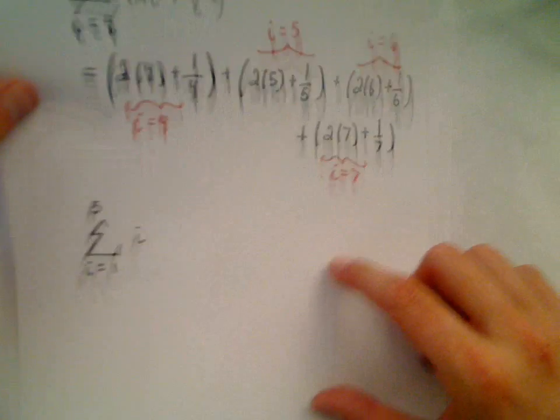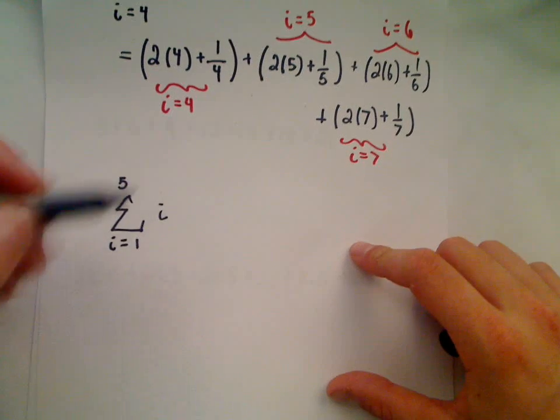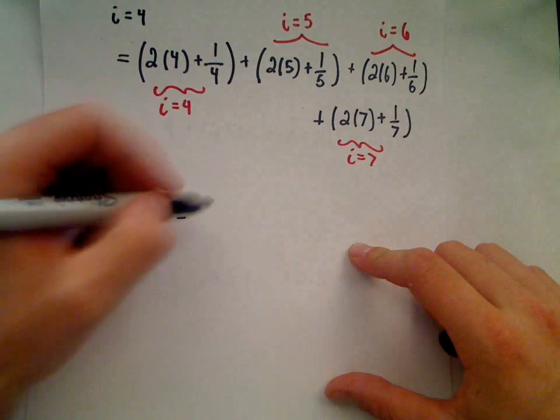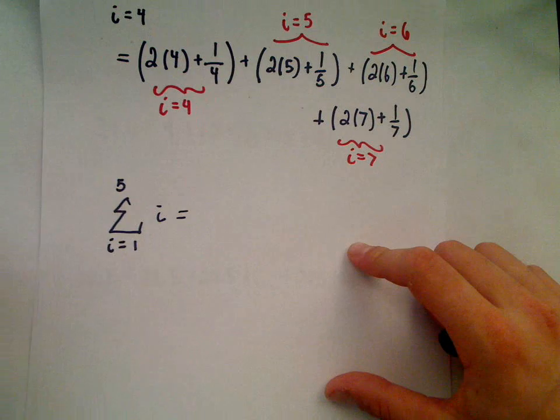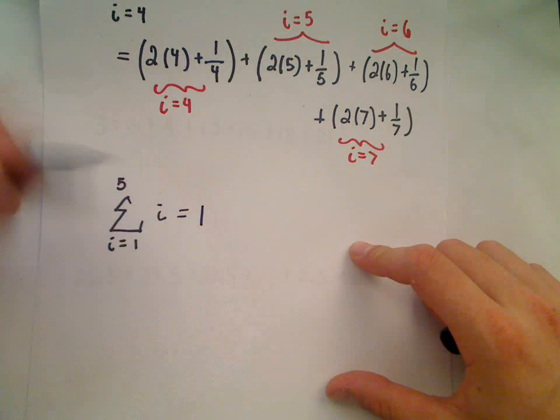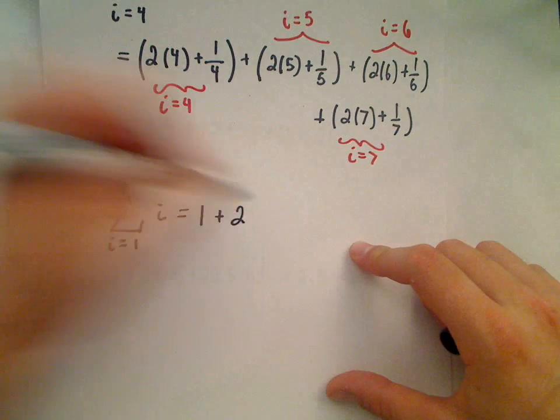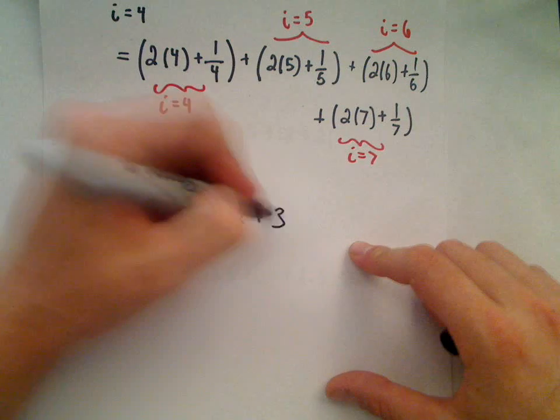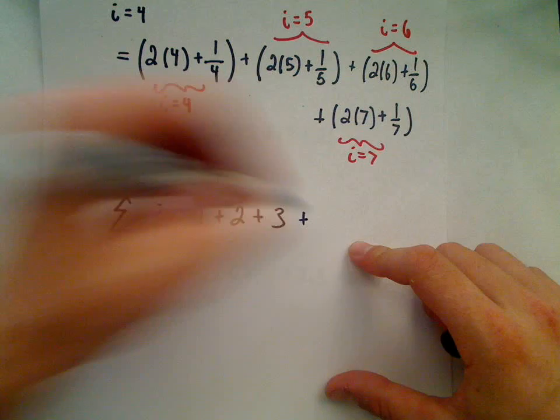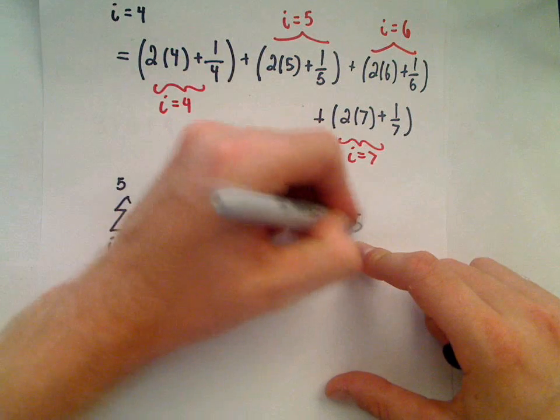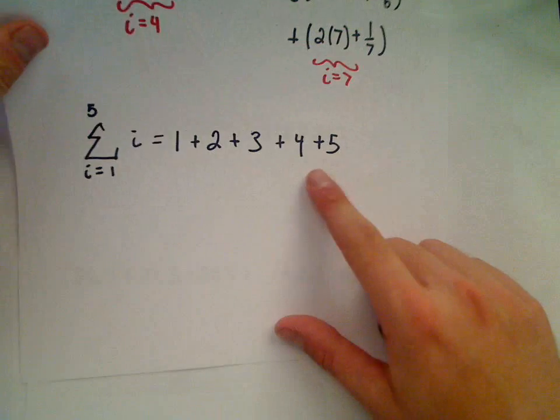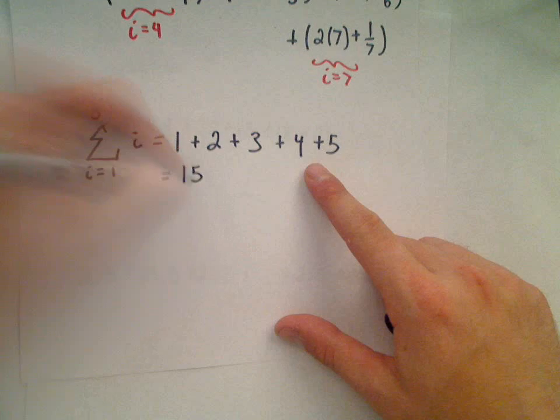Let's look at our next example, from i equals 1 to 5. This one's a little easier, maybe a bit trivial compared to the other ones. It says you just plug in 1, then you get 2, then you get 3, then if I plug in 4 I'll get 4, and lastly I get 5. So if we add these up, you get the number 15.